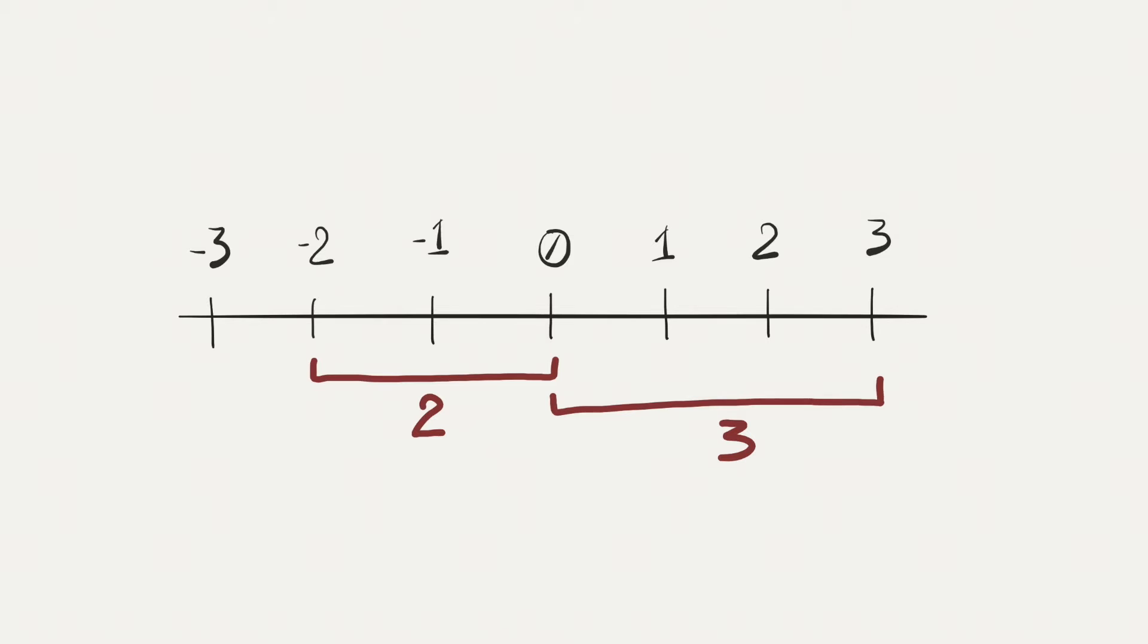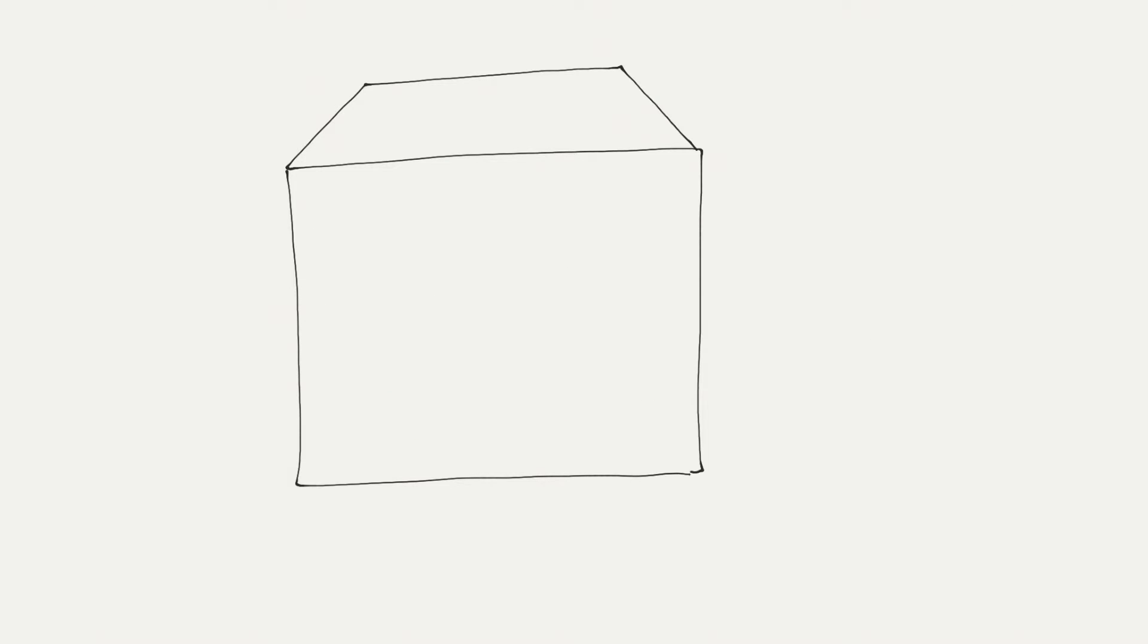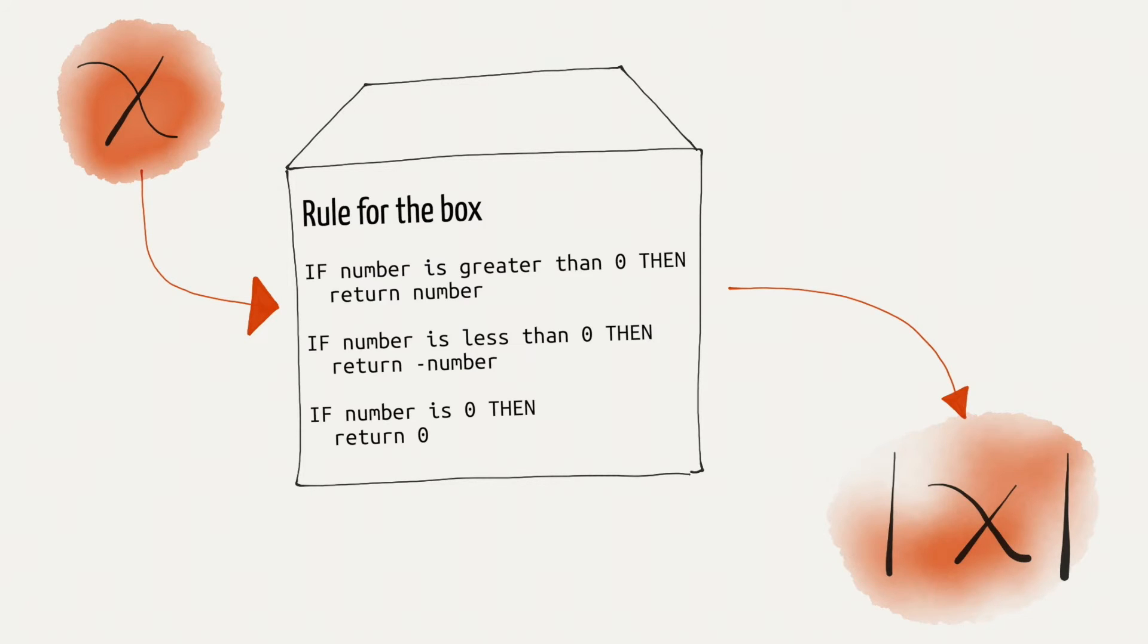One way to think of it is, it's the distance from zero. Imagine you want to describe a black box, a function that accepts a number and returns its absolute value. You'll need to make a rule inside the box, something like this: If number is greater than zero, then return number. If number is less than zero, then return minus number. If number is zero, then return zero.